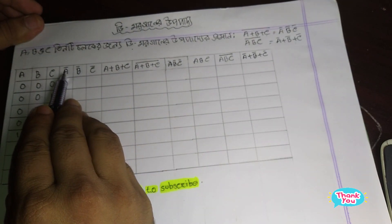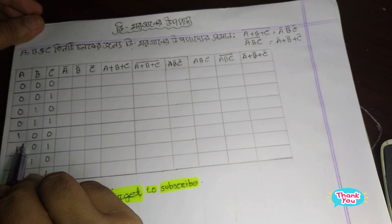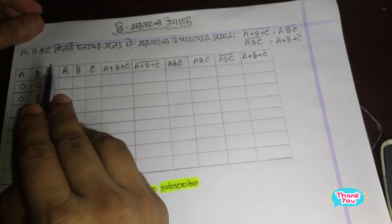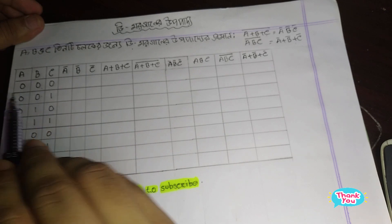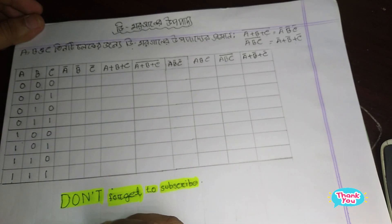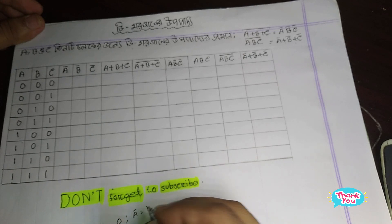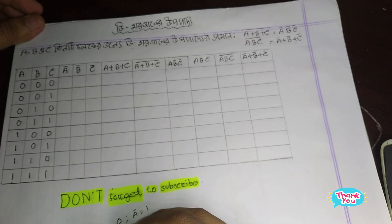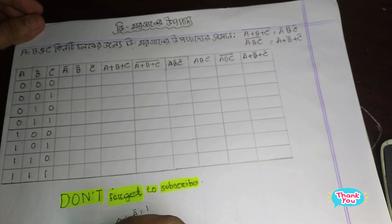So, a prime — if a is 0, a prime will be 1. If a is 1, a prime will be 0. This is the basic rule for a prime.